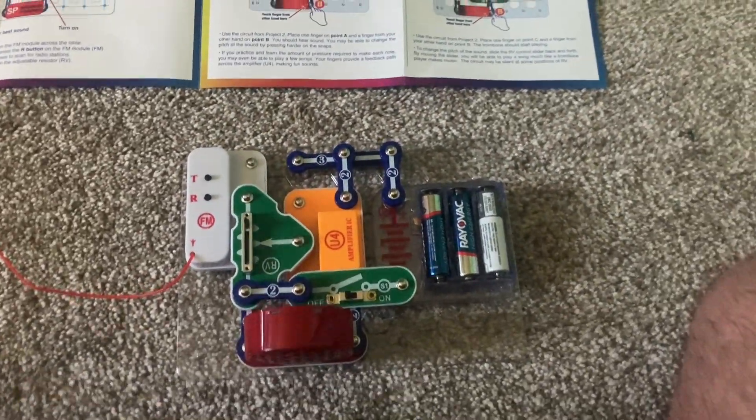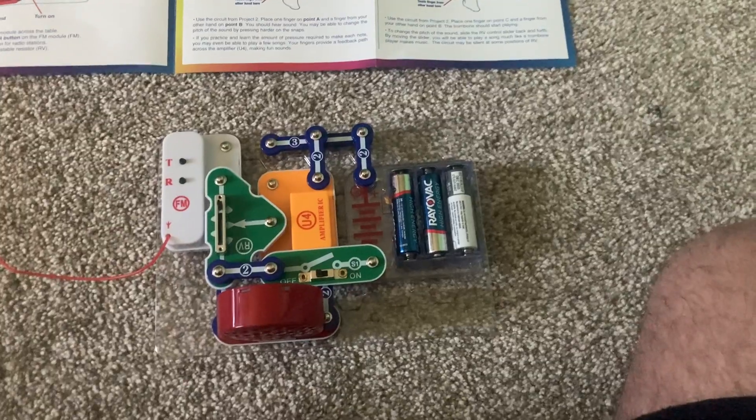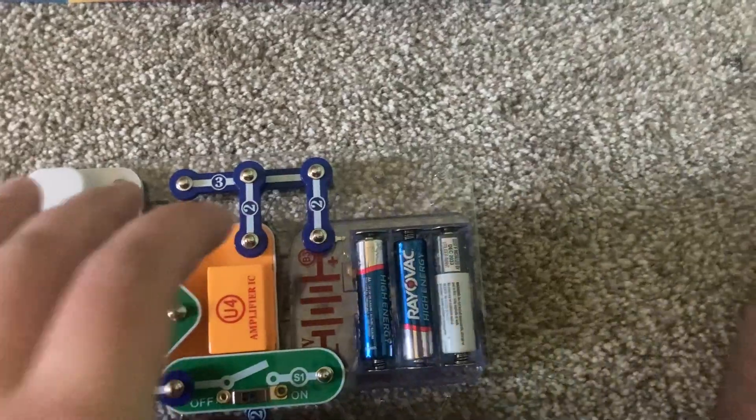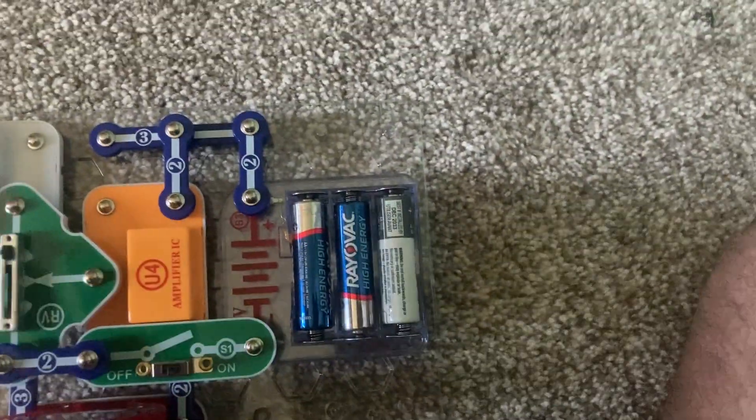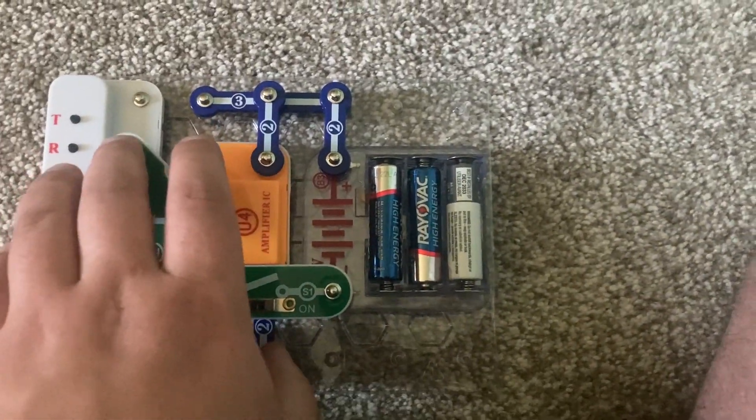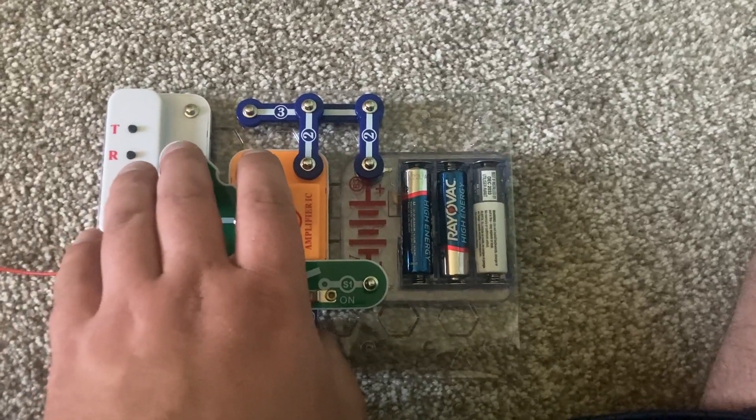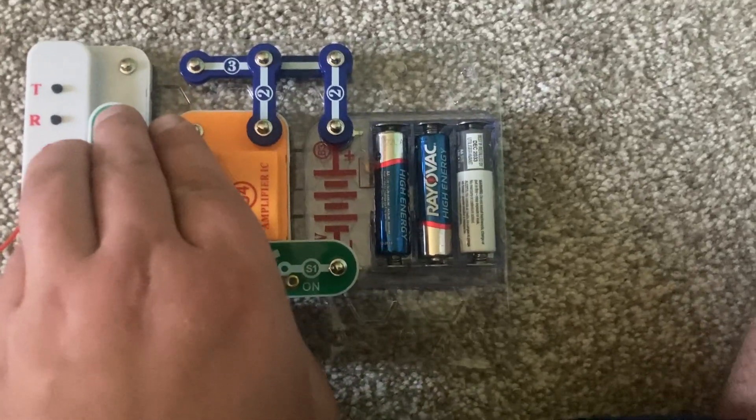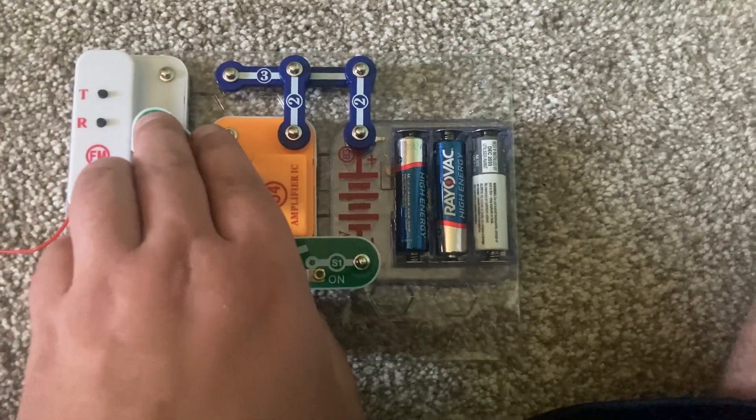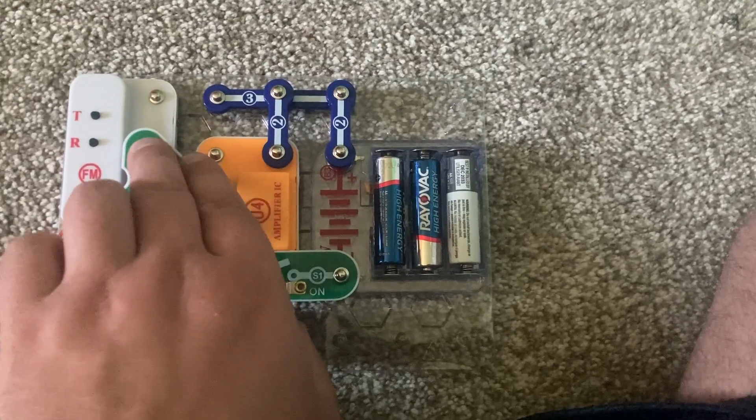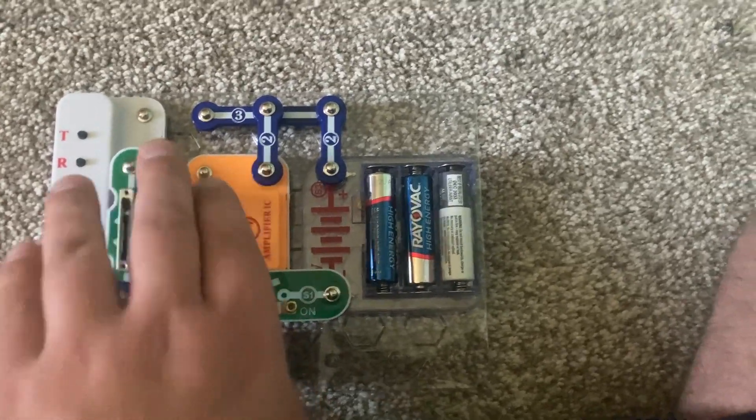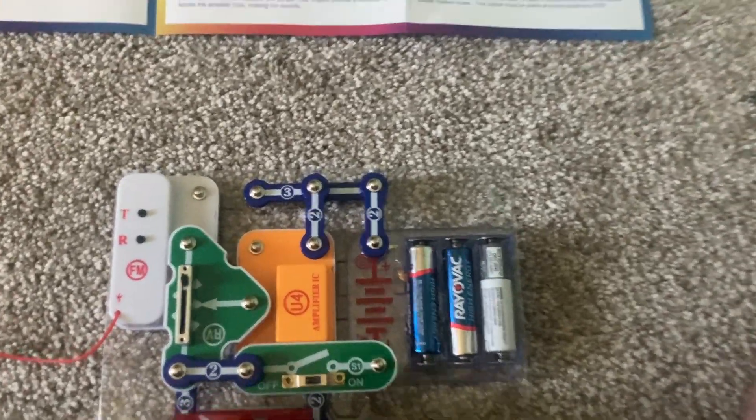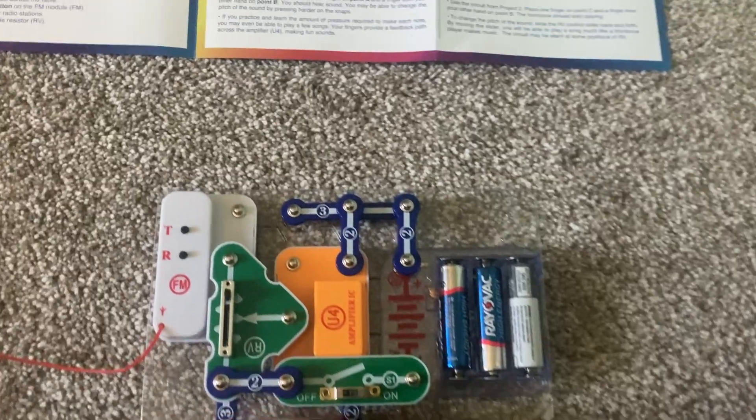Project four is a simulated trombone. When I turn on the slide switch and place my fingers between these two points, you may hear sounds that are akin to that of a trombone. And then I can move the lever on the adjustable resistor to vary the pitch. The lever on the RV resistor represents the slide on a trombone used to change the sound's frequency.